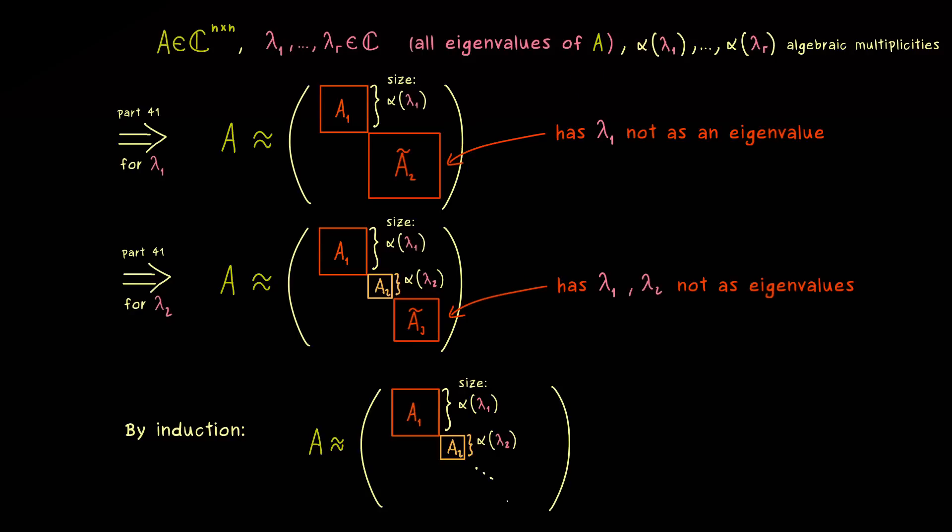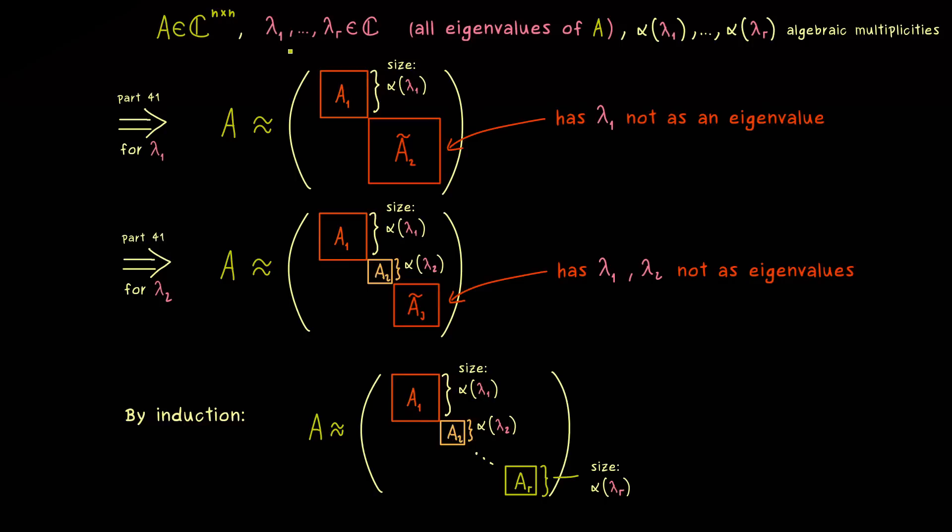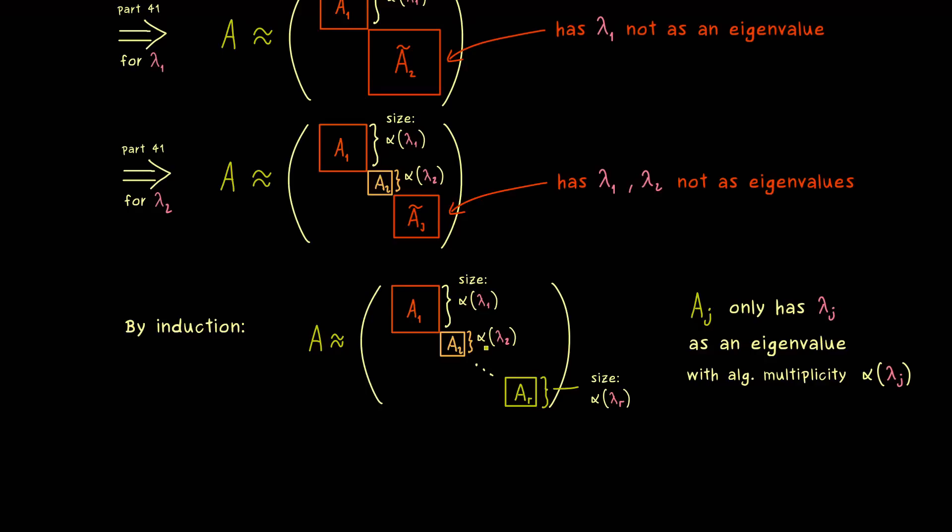For example, we also know from the last video that each block here only contains a single eigenvalue. In general, we could write that the matrix Aⱼ only has λⱼ as its eigenvalue. And moreover, by the size of the block, we also know that the algebraic multiplicity stays the same. And this property is exactly what we have in the Jordan normal form as well. So we are already really close.